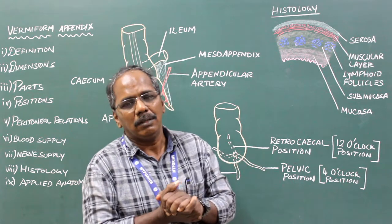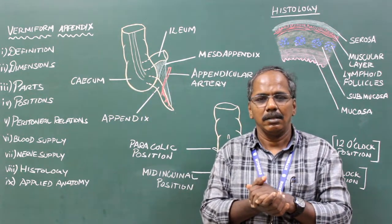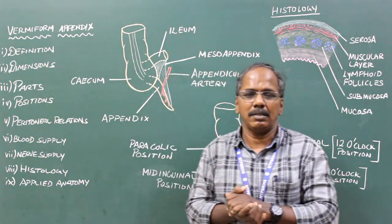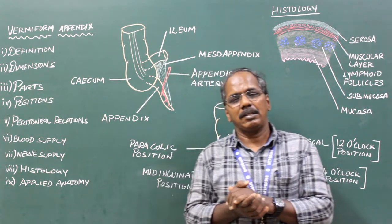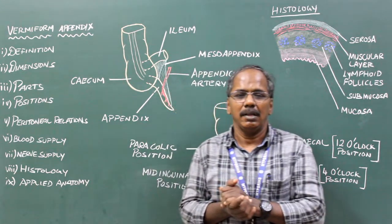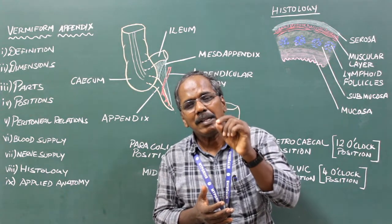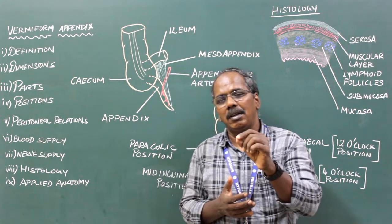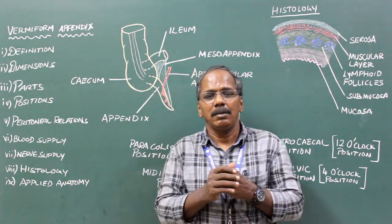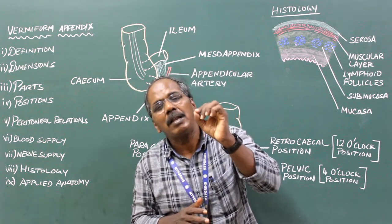Applied Anatomy — Appendicitis. Inflammation of the appendix is known as appendicitis. The initial pain of appendicitis is referred pain felt in the umbilical region because both have the same segmental nerve supply (T10).